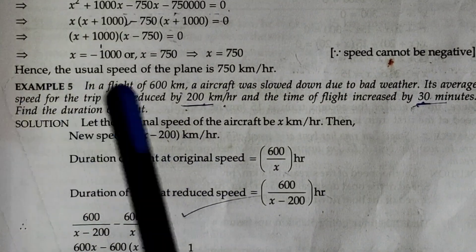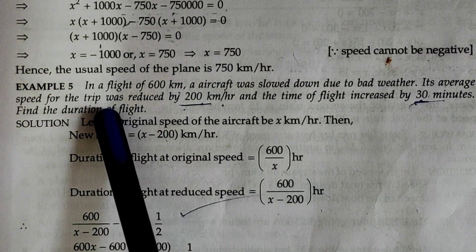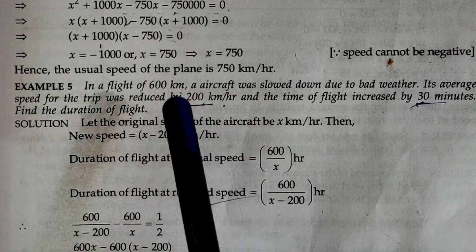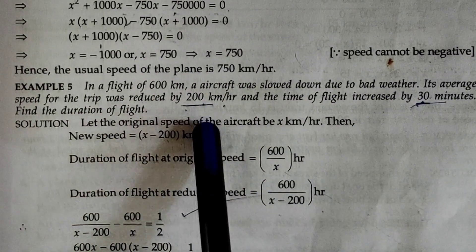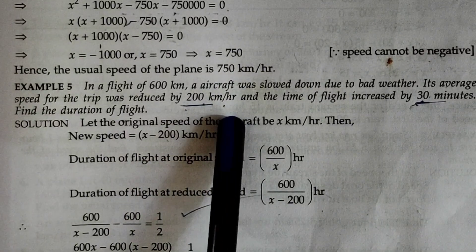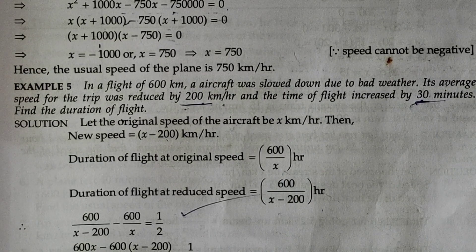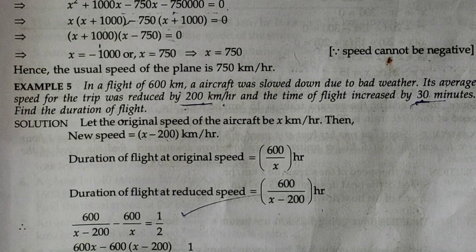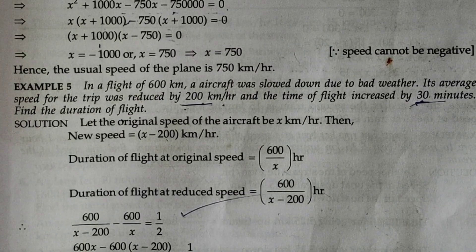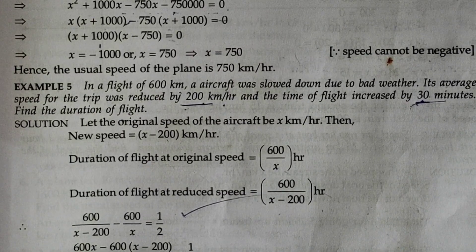The total distance travelled is 600 km. But because of bad weather, the speed is decreased by 200 km per hour. Then, the time is increased by 30 minutes. The same distance is covered but in 30 minutes more.